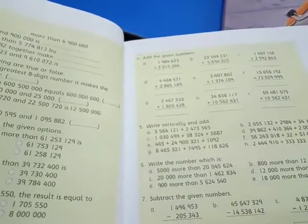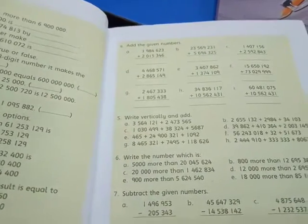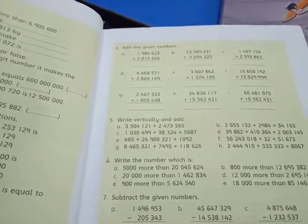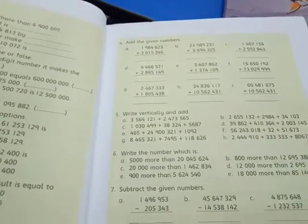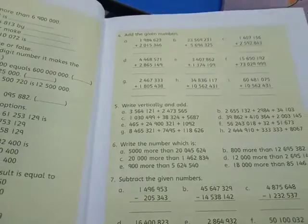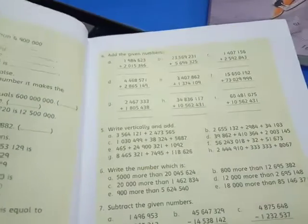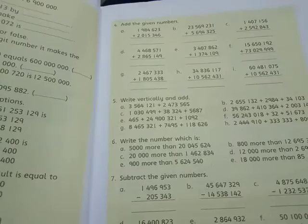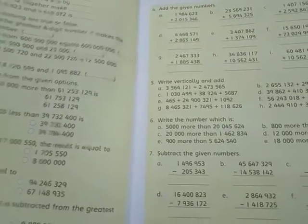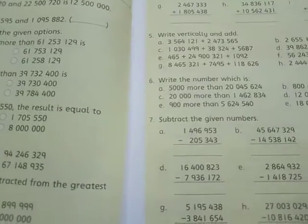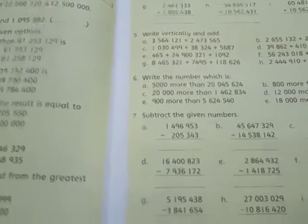Page number 7: you need to do objective type questions. Question number 4 is addition. Question number 5: write vertically and add. Question number 6: write the number which is more than the given number. And then subtraction questions.